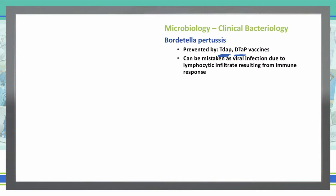A pertussis infection can often be mistaken for a viral infection because of the lymphocytic infiltrate we get from the immune response. We treat this with macrolides. If the patient is allergic to a macrolide, then we can use Bactrim or TMP-SMX.